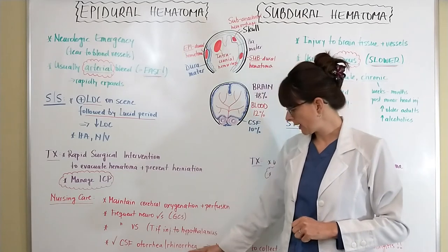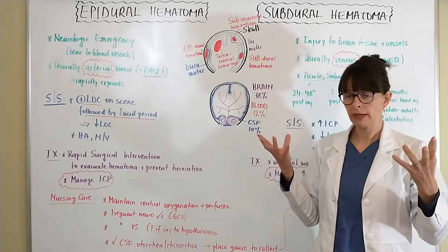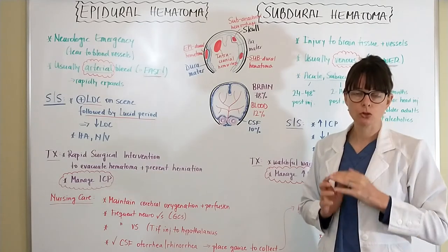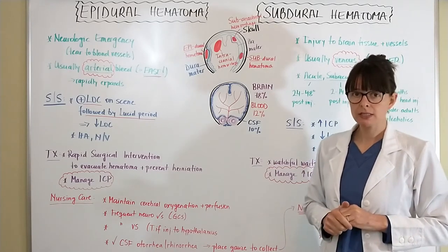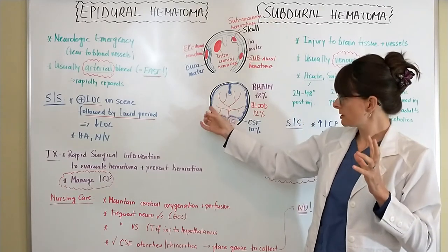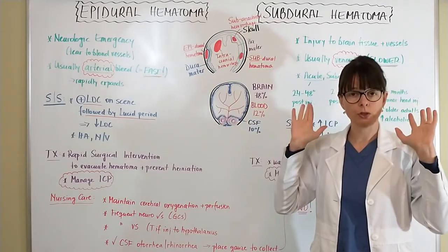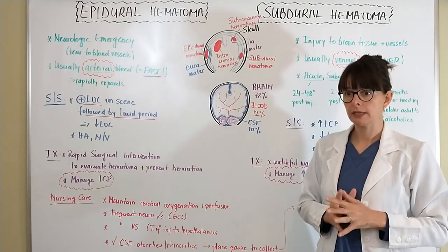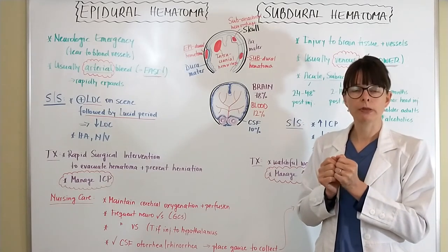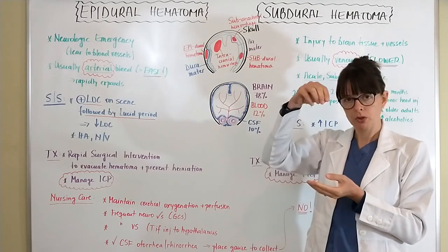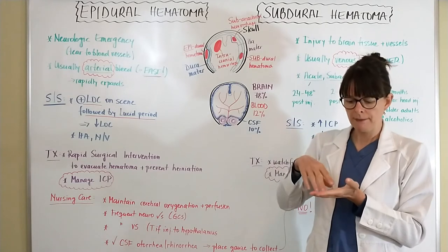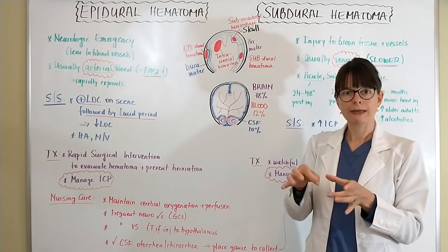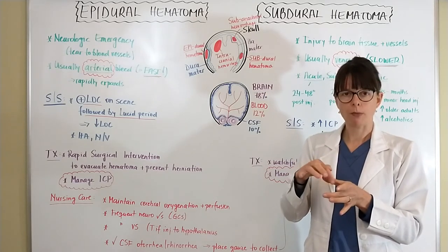We also need to check for CSF otorrhea and rhinorrhea — 'orrhea' meaning fluid coming out, 'oto' from the ears or 'rhino' from the nose. This indicates cerebrospinal fluid may be leaking due to an interruption of the skull or meninges. If there is nasal or ear drainage, collect it on gauze and look for the halo sign: blood in the center with a ring of CSF separating around it. This is an informal test; fluid should be sent to the lab for formal analysis.